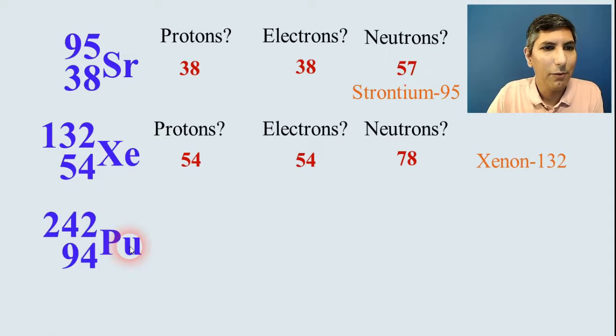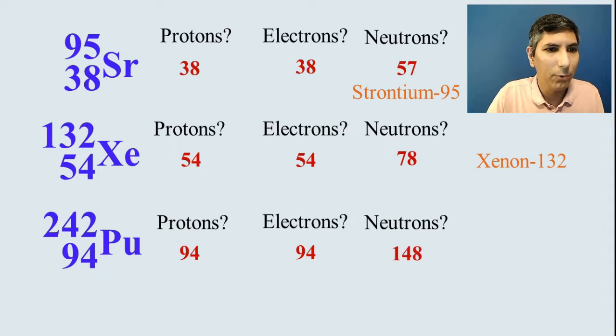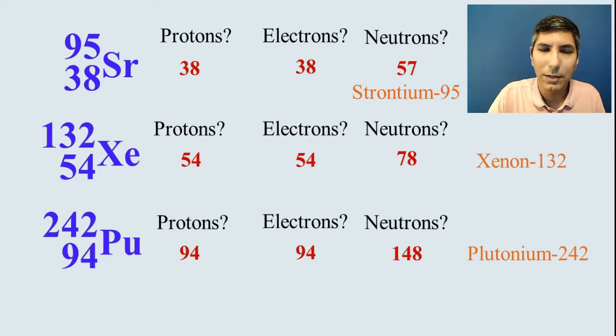We have this one. We have plutonium here. Once again, 94 protons, 94 electrons, and subtract to get that number of neutrons, about 148 neutrons. This is plutonium-242. So that's how you can figure out the number of protons, electrons, and neutrons for any isotope.